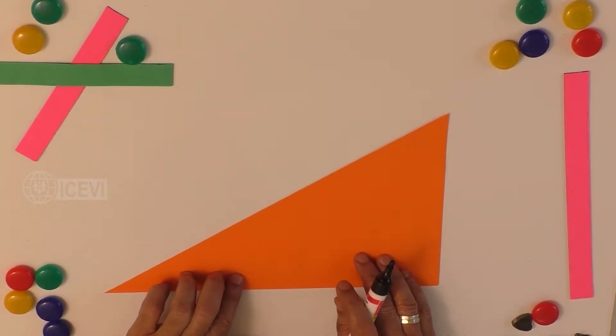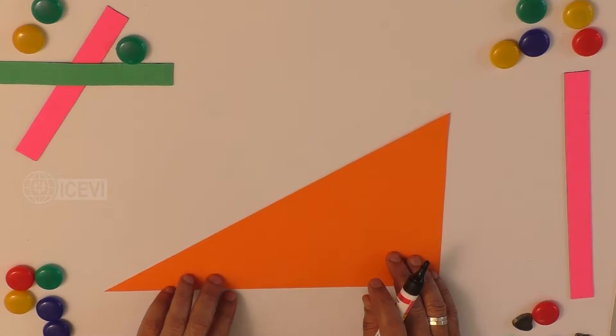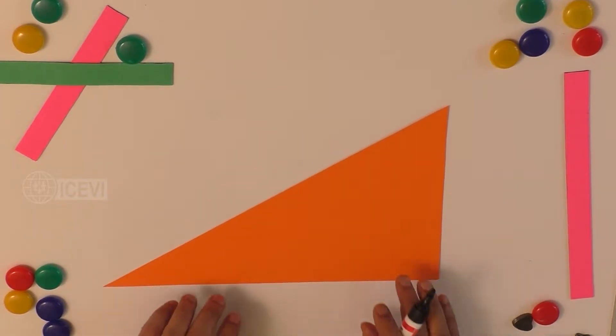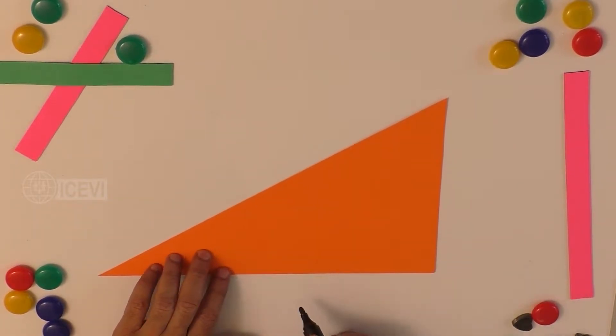let us discuss how we calculate sine theta, cos theta, and tan theta. Let us take a right angle triangle.